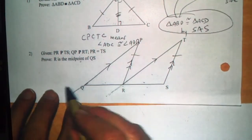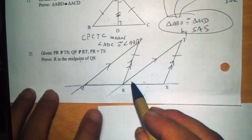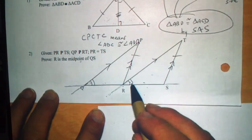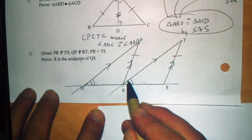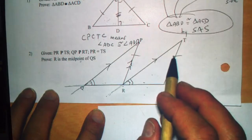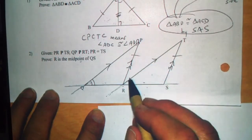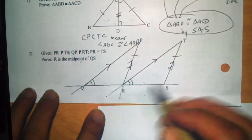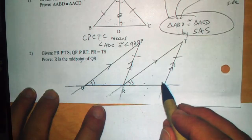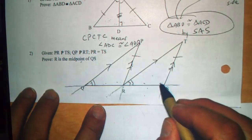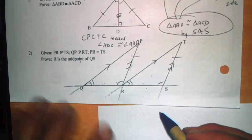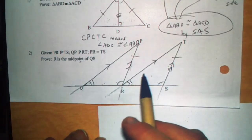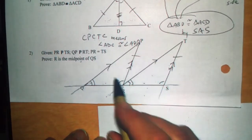If this line is acting as a transversal, what can we say about these two angles? They're corresponding angles, and corresponding angles are congruent. Now things are starting to take shape. We have S. If we have these two lines parallel, this also works as a transversal, and these two angles are also corresponding angles. So suddenly we have AAS — angle angle side — and that is a theorem we can use. Now we can prove that these two triangles are congruent.